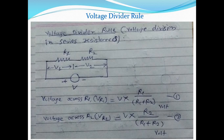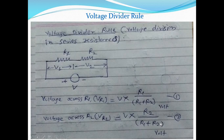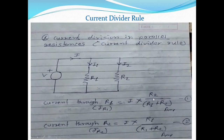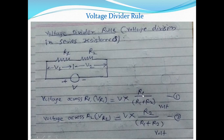Similarly, the formula for voltage drop across R2 is VR2 equal to total voltage V multiplied by R2, divided by R1 plus R2. To summarize: in the current divider rule, it is total current I multiplied by the opposite resistance, divided by the sum of resistances; whereas in the voltage divider rule, it is total voltage multiplied by the resistance across which we find the voltage drop, divided by the sum of resistances.